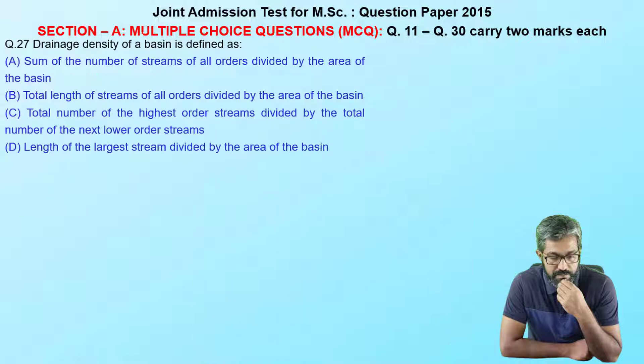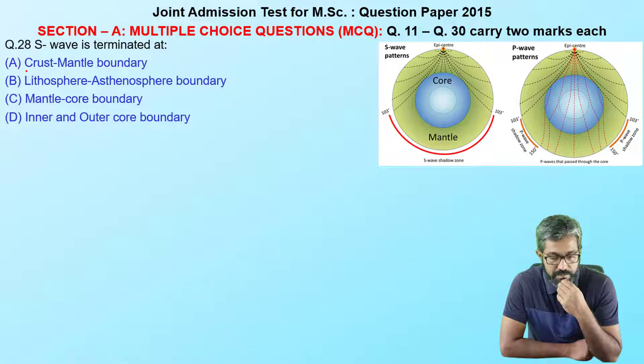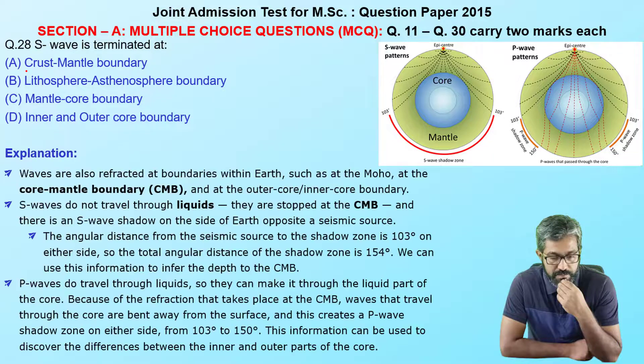Remember this dentition chart for laminar brachiopods — future questions will likely reference it. The next question is entirely formula-based. Drainage density of a basin equals the total length of all streams divided by the total area of the basin. No further explanation needed — my answer is B.